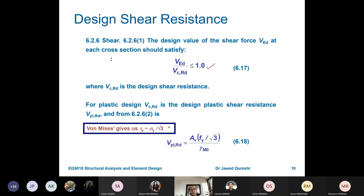V_ED or V_C,RD, applied versus capacity, should be less than or equal to 1. But most of the cases, it is less than or equal to 0.5. Shear is not a big issue in building applications. And then again, this is the formula V_PL,RD which I wrote a little earlier.